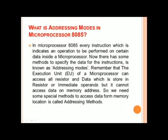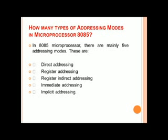Remember that the execution unit of the microprocessor can access all registers and data stored in registers or immediate operands, but it cannot access data on a memory address. So we need some special method to access data from a memory location, and this is also called addressing modes.